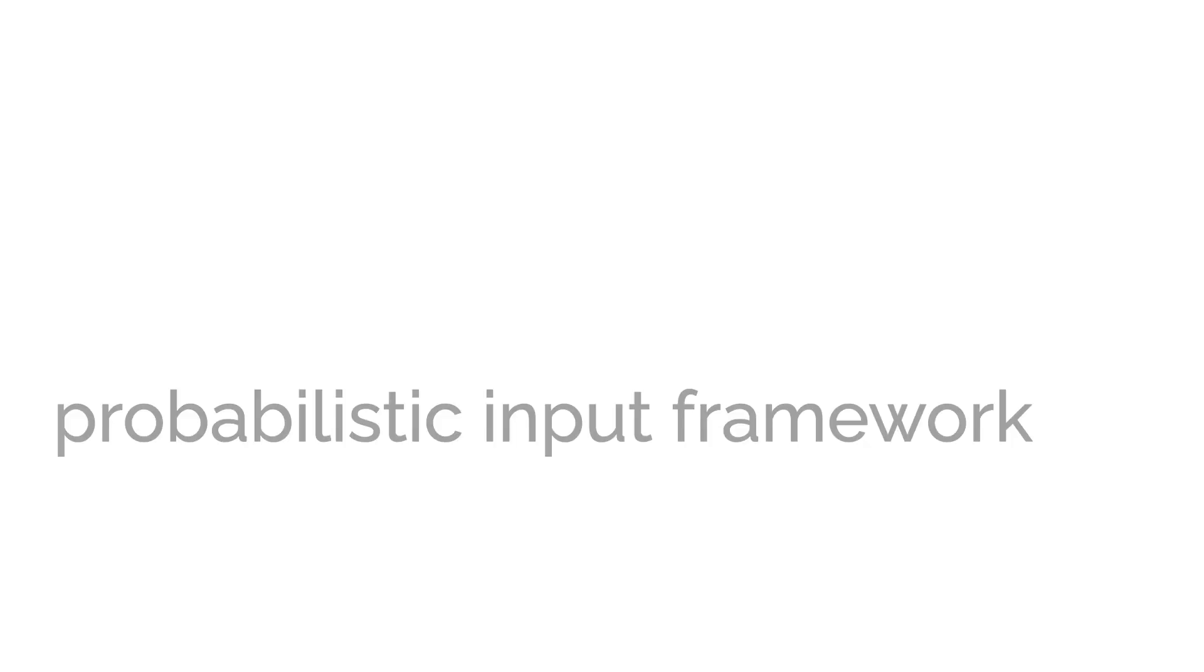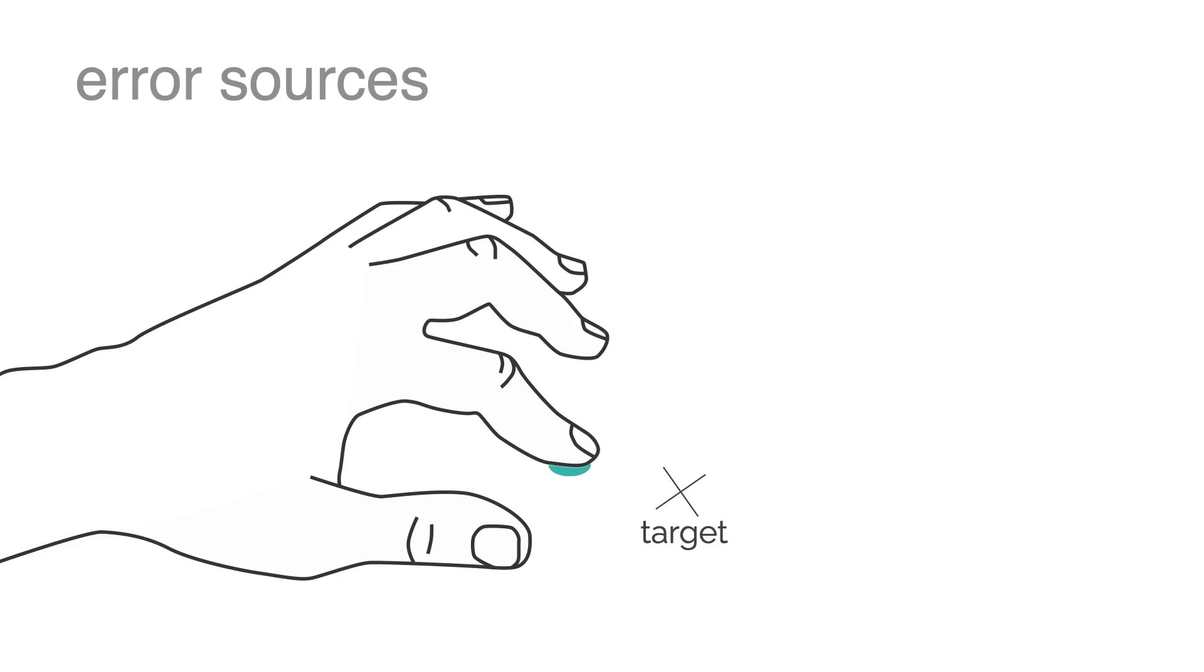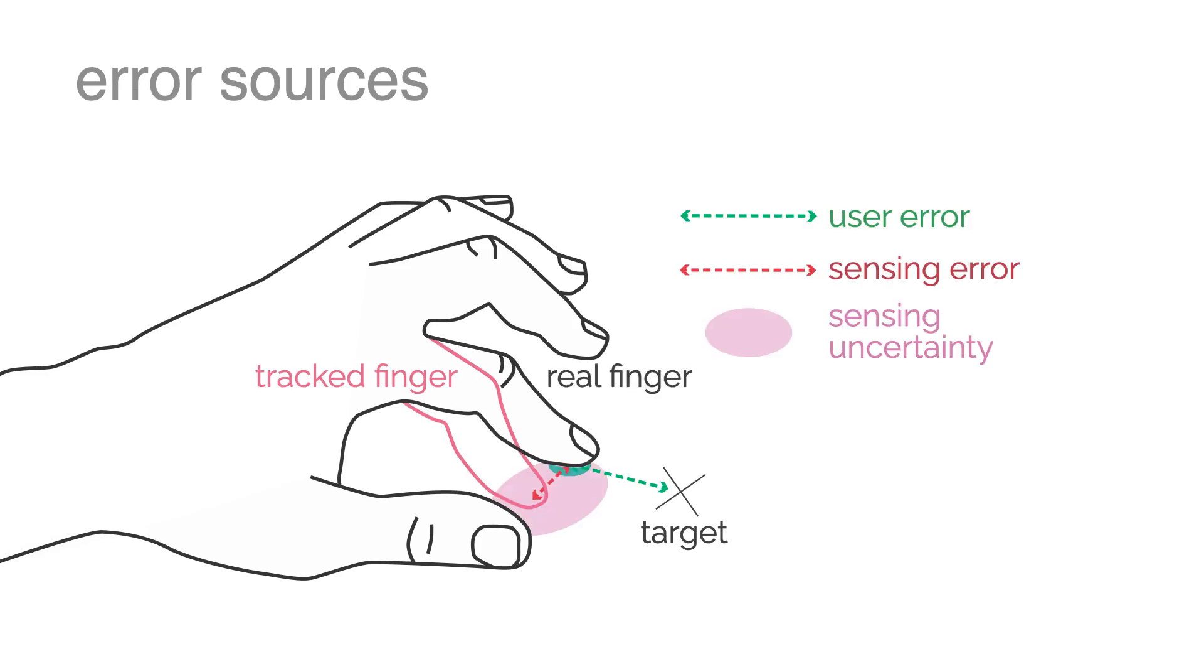We further propose a probabilistic command prediction framework that explicitly accounts for both errors due to user behavior and those attributed to the sensing pipeline.